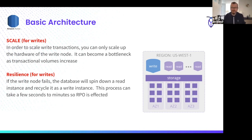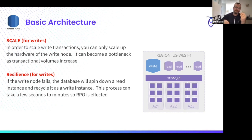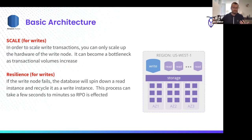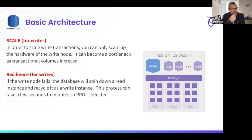And then resilience for writes — what happens if the write node fails? It's smart enough to take a read node, spin it down and recycle it back up as a write instance. So until that write node comes back, you basically have a few seconds between the spin-down of that read node and it coming back as a write node. There is RPO — I think it's a five to ten second downtime for RPO for writes, and you may miss some transactions in that timeframe.